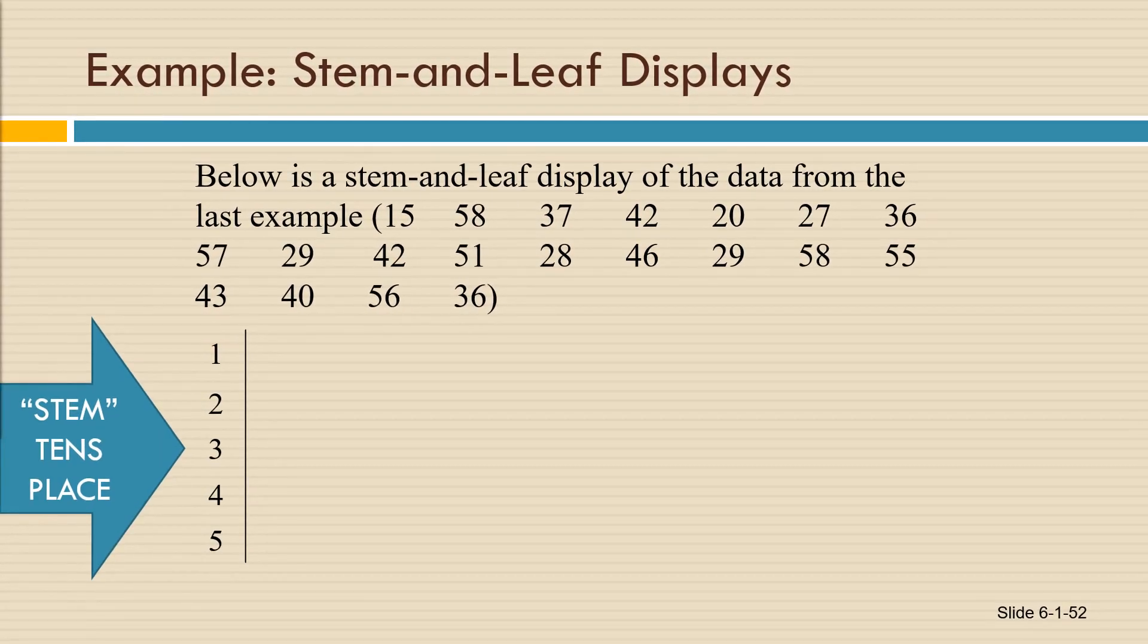So the stem is going to be the numbers 1, 2, 3, 4, and 5: 10s, 20s, 30s, 40s, and 50s. And then we're going to use the ones place digits and place them next to the correct tens place digits.